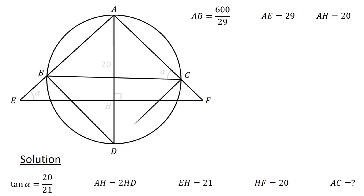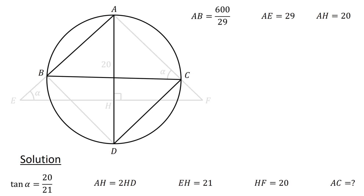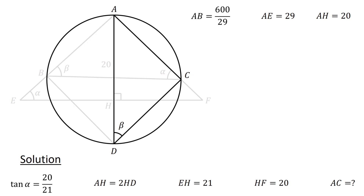Next, connect C to D, and then consider the lines AB, BC, AD, and CD and the circle. Let's define angle ABC as beta. Then, since angle ADC and angle ABC subtend the same arc, we have angle ADC equals beta. Following this, consider triangle ADC and the circle. Angle DCA is an angle in a semicircle, and therefore equals 90 degrees.